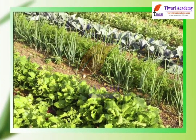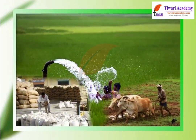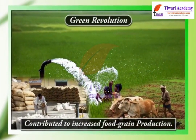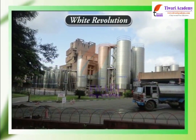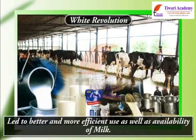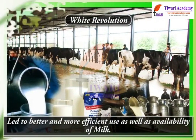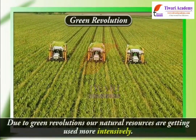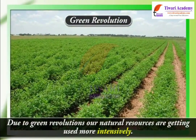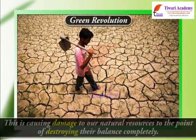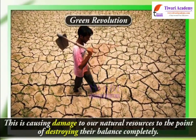We have two major revolutions for this demand. The green revolution, which contributed to increase food grain production. The white revolution, which has led to better and more efficient use as well as availability of milk. Due to green revolutions, our natural resources are getting used more intensively, causing damage to our natural resources to the point of destroying their balance completely.